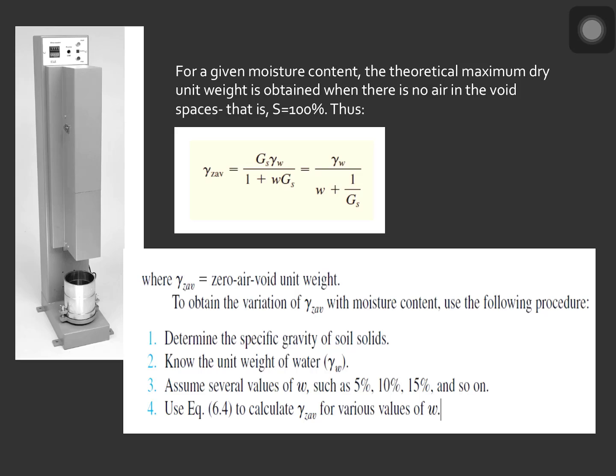When the soil is at its 100% saturation, the void ratio is equal to the moisture content multiplied by the specific gravity. Therefore, the zero air void unit weight will be equal to specific gravity multiplied by unit weight of water all over 1 plus moisture content multiplied by specific gravity.